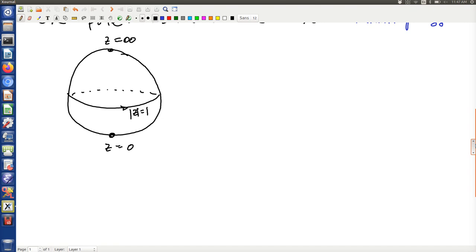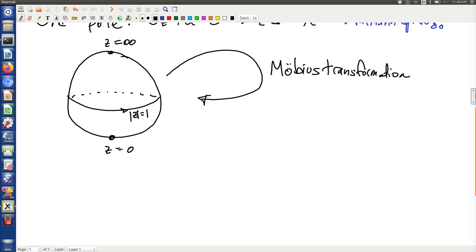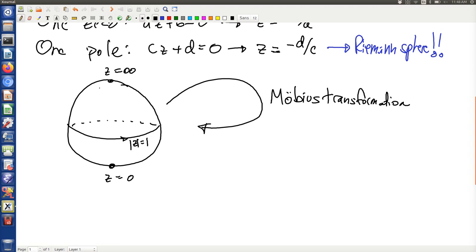Now what the Möbius transformation does is it takes this Riemann sphere and maps it back onto itself. And what it does in particular is it gives you a new zero and a new pole. The pole, of course, is where w equals infinity, and the zero is where w equals zero.